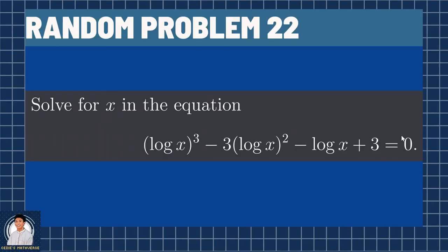So here is Random Problem 22. Solve for x in the equation: the quantity logarithm of x cubed, minus 3 times the quantity logarithm x squared minus logarithm x plus 3, equals 0. If you want to solve this problem first, you can give it a try and pause the video. But if you want to view the full solution, continue watching.